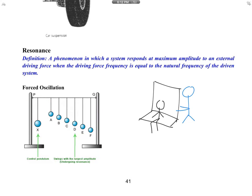We will see an experiment on video. We have a row of pendulums attached to a common string, and pendulum X is the one we displace first by pulling to one side and letting go. As it swings, it causes the string to twist, which drags all the other pendulums. The one that will undergo the biggest oscillation is D, because it has the same natural frequency.